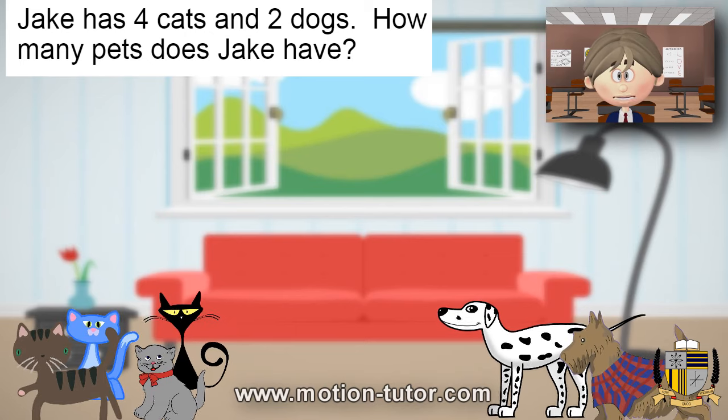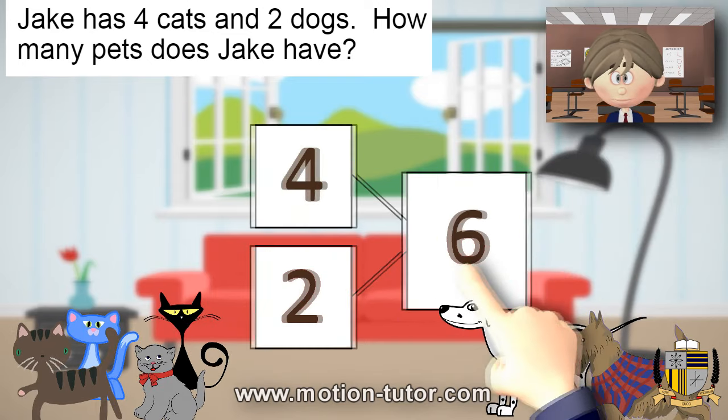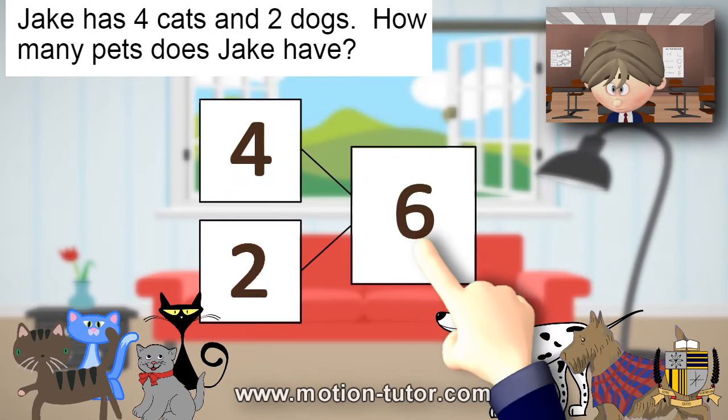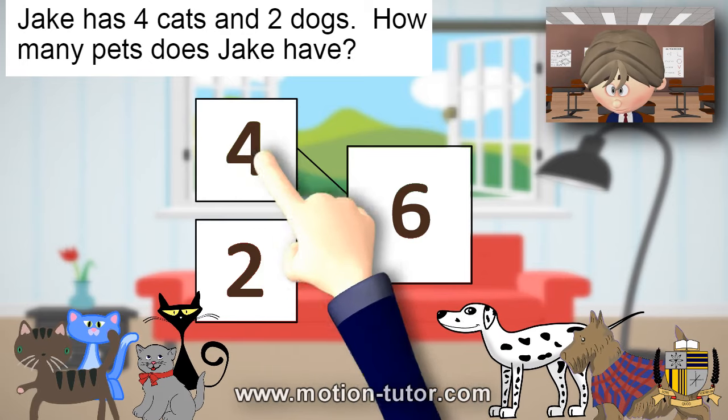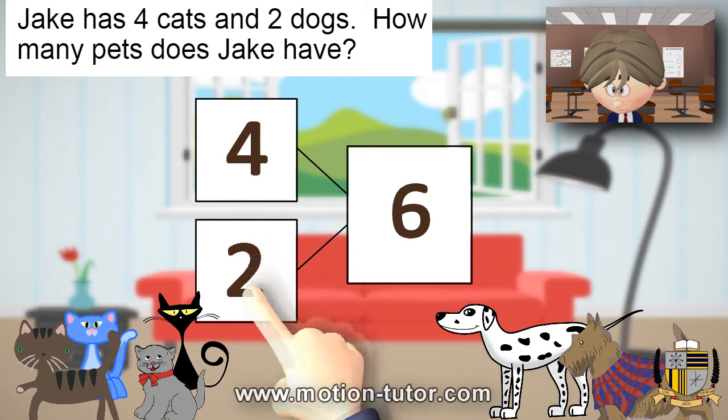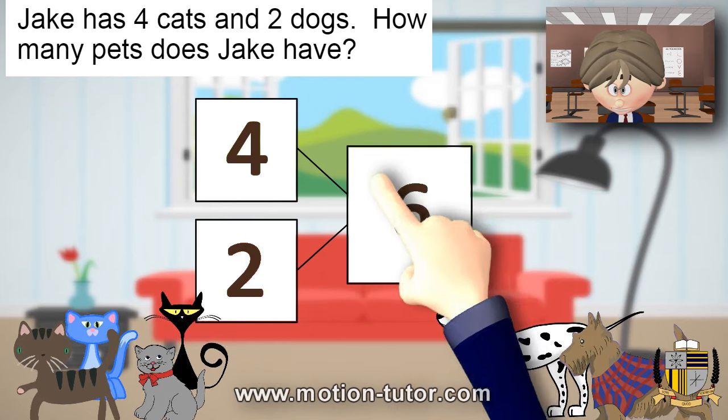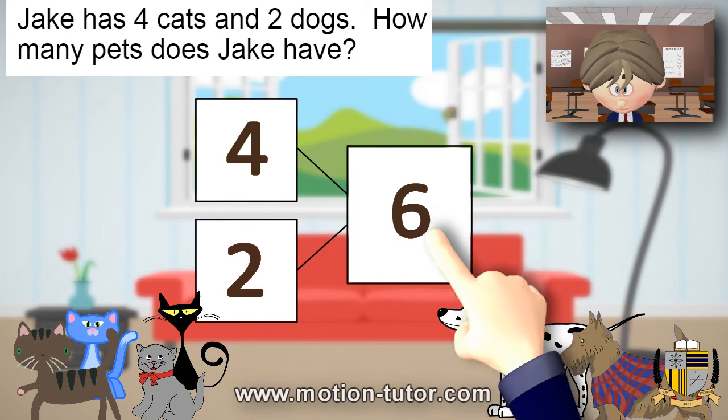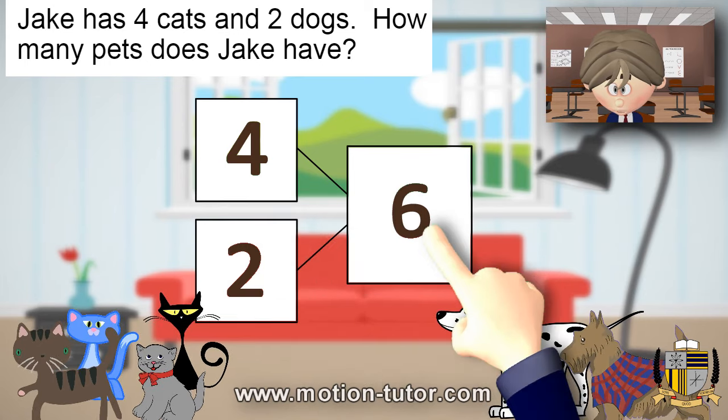So how would that number bond look? Let's take a look at this. So here's the number bond. Here's the four that represents the four cats. Here's the two that represents the two dogs. And together, they make six. So the four and the two is six.